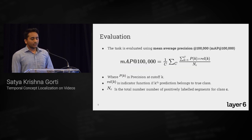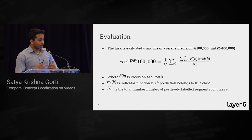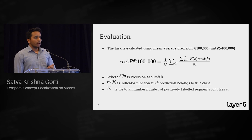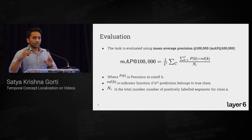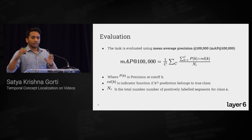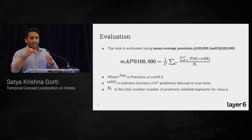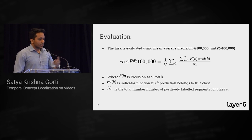All models are evaluated on mean average precision at 100,000. MAP is calculated by retrieving the top 100,000 candidate segments for each class, calculating the average precision for that class, and then taking the mean across all classes.